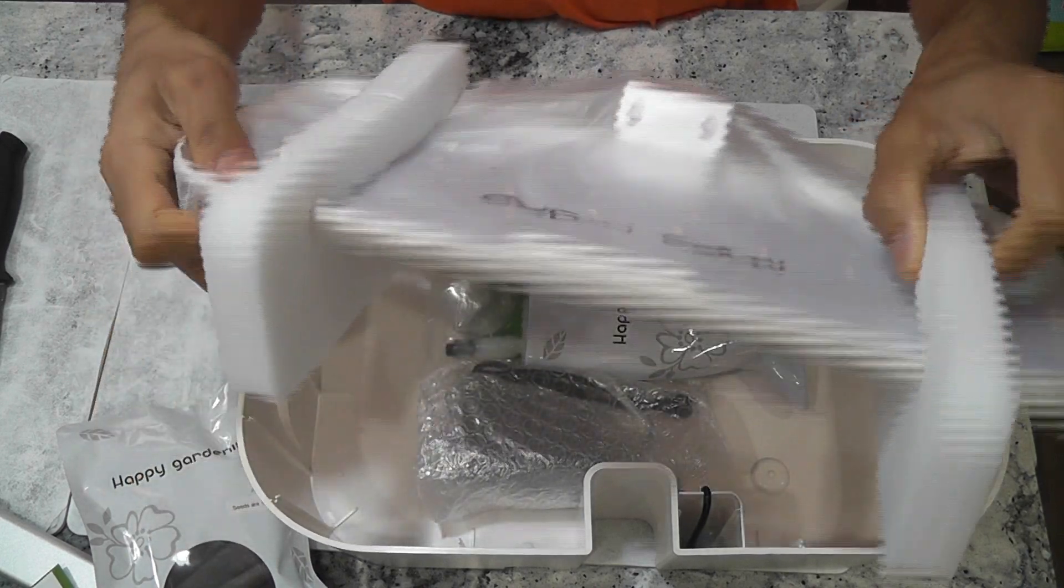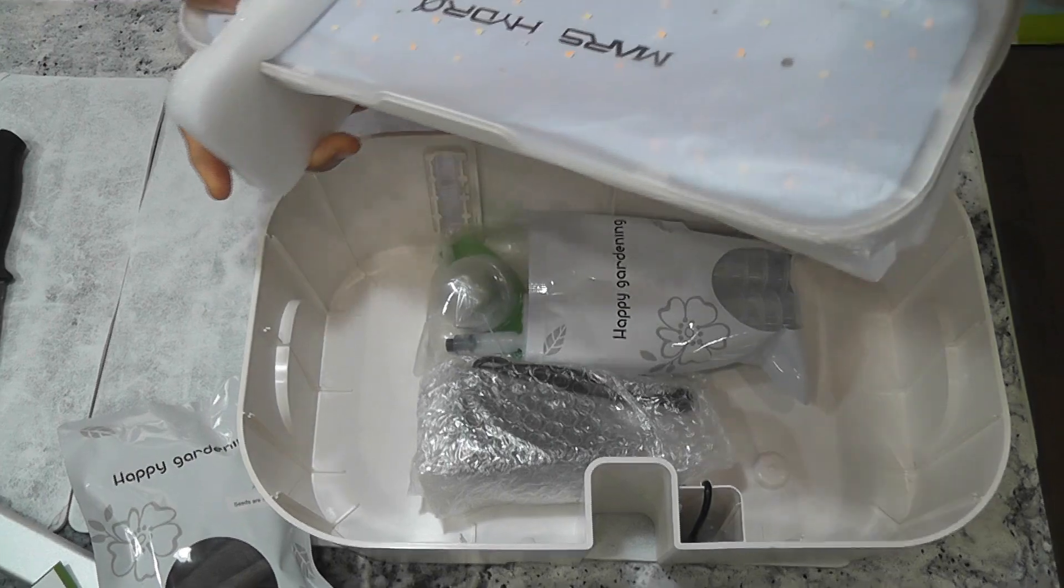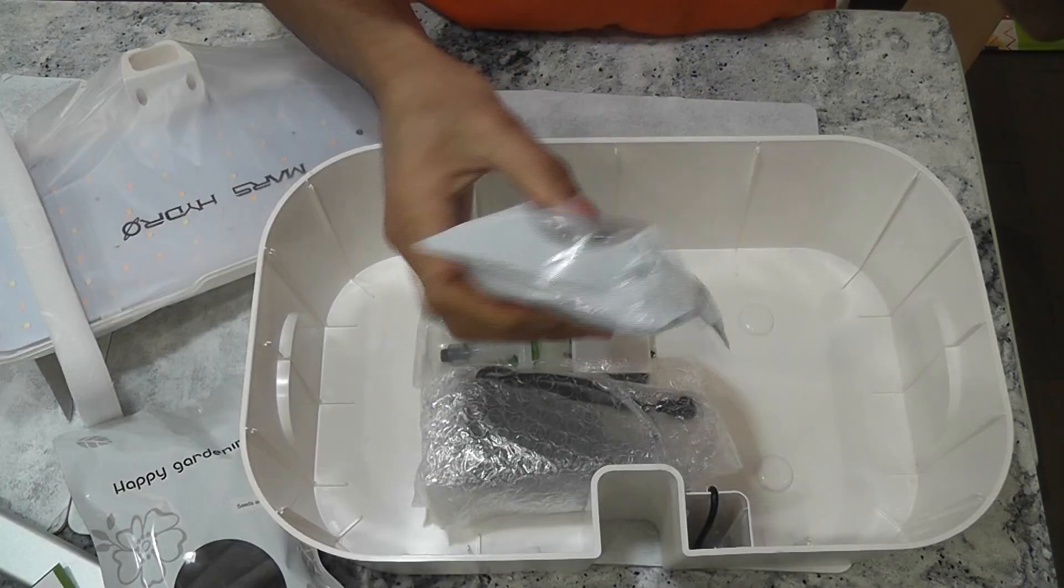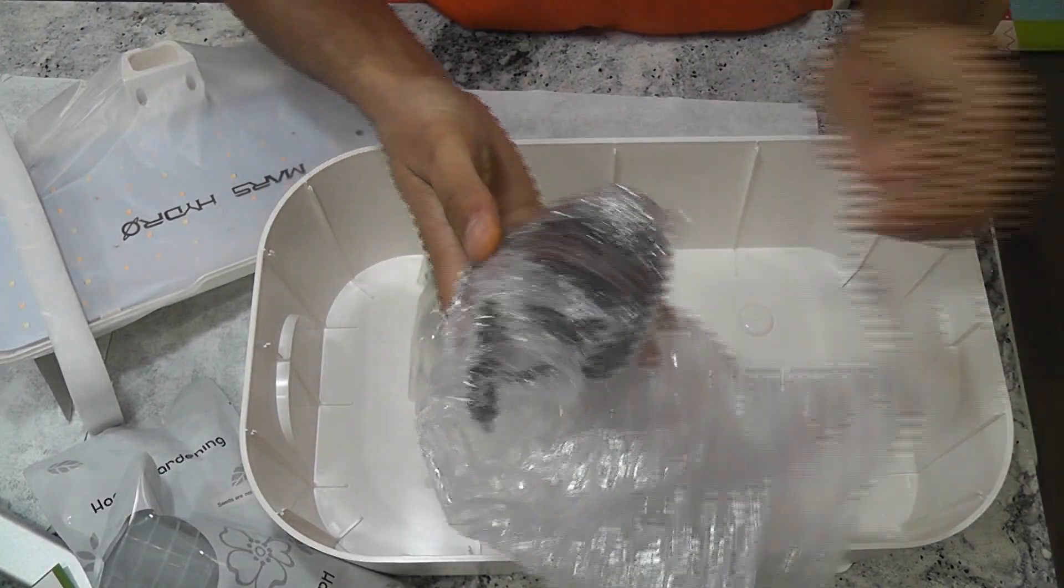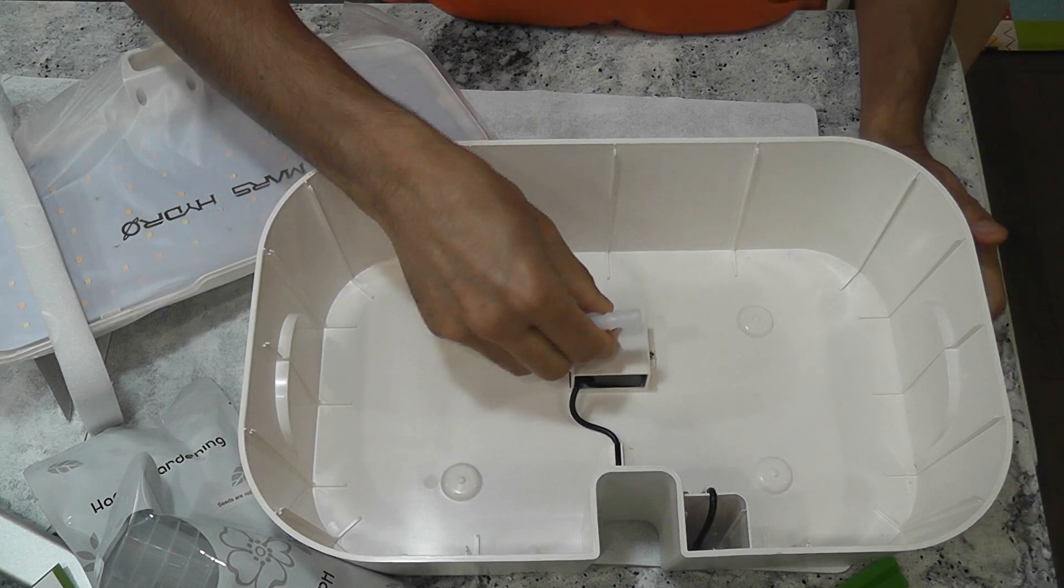Next up is the light panel. It is simple and straightforward to use. Now the accessories: sponges, pod baskets, power adapter, domes, a cover and the water dispatching pipe.